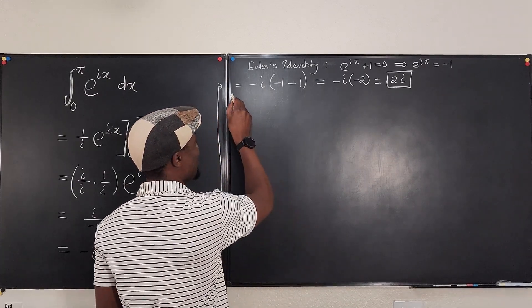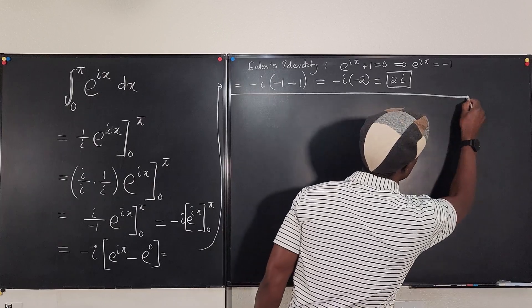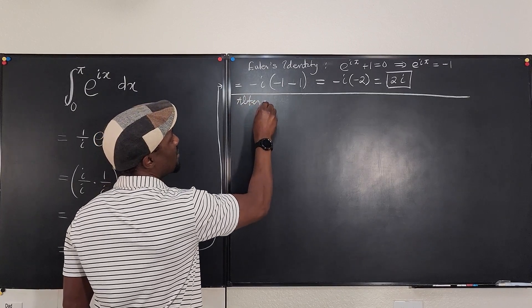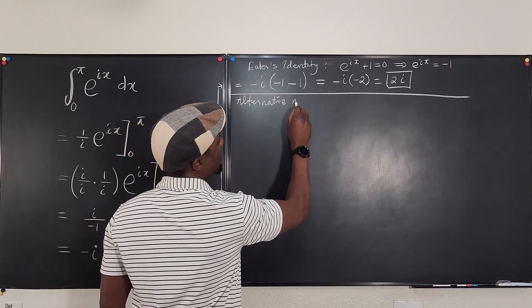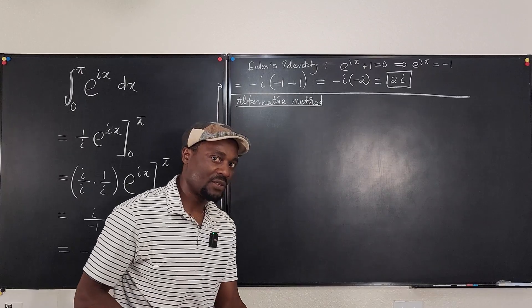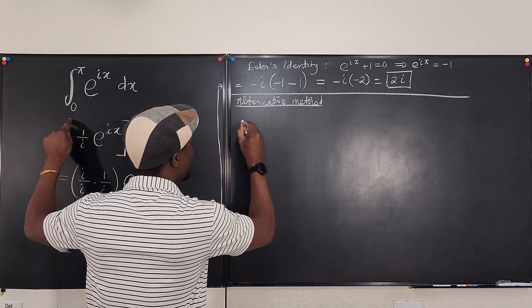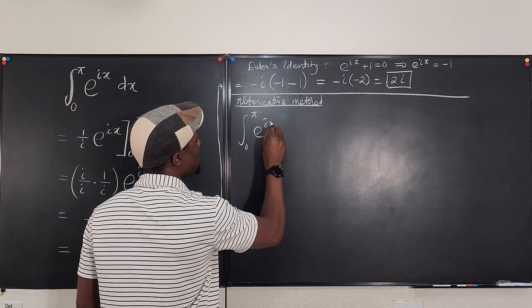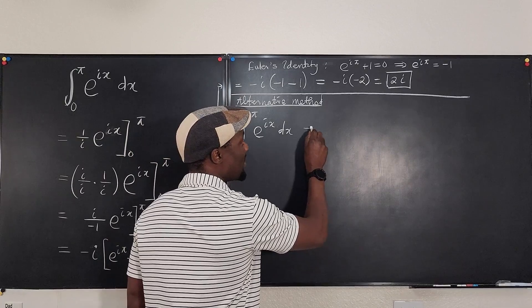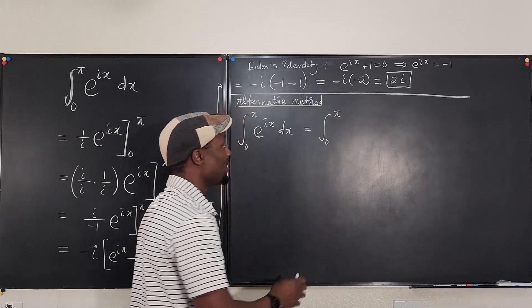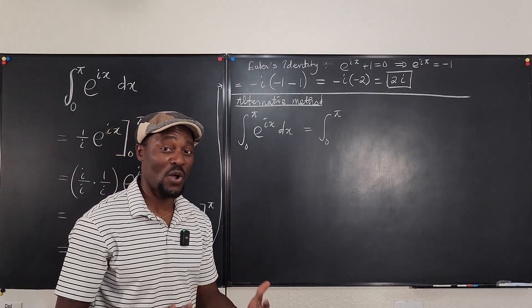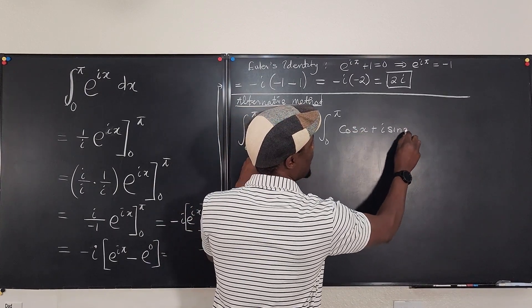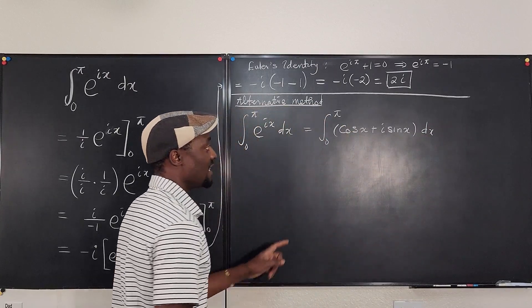For the alternative method, we still use Euler's equation. The integral from zero to pi of e to the ix dx can be rewritten using Euler's formula: e to the ix equals cosine x plus i sine x. So we integrate cosine x plus i sine x from zero to pi.